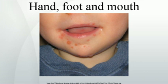Epidemiology: Hand, foot and mouth disease most commonly occurs in children under the age of 10. Outbreaks: In 1997, 31 children died in an outbreak in the Malaysian state of Sarawak. In 1998, there was an outbreak in Taiwan affecting mainly children. There were 405 severe complications and 78 children died. The total number of cases in that epidemic is estimated to have been 1.5 million.